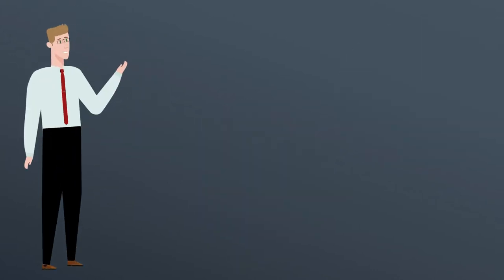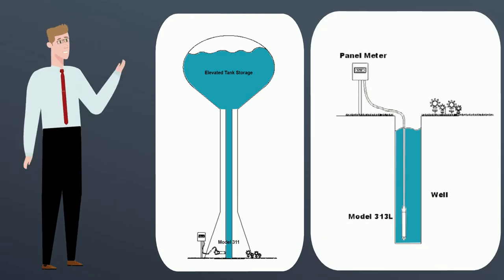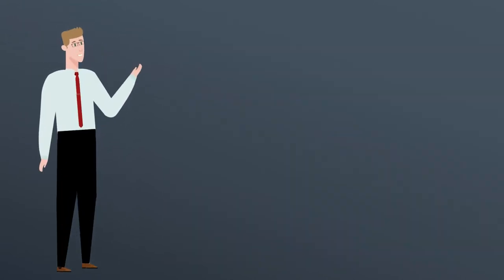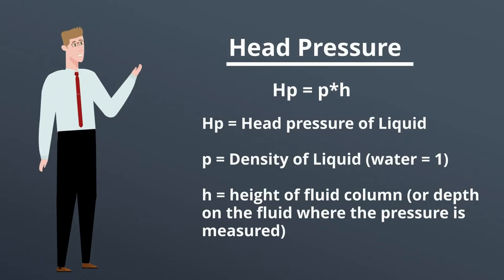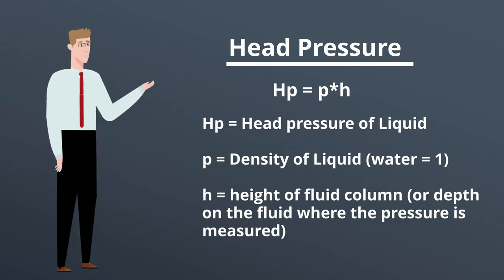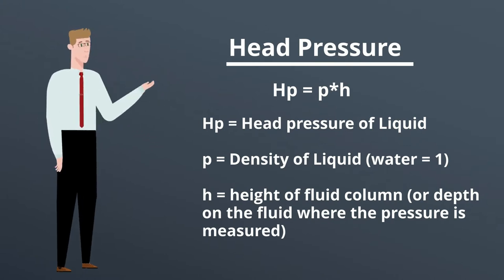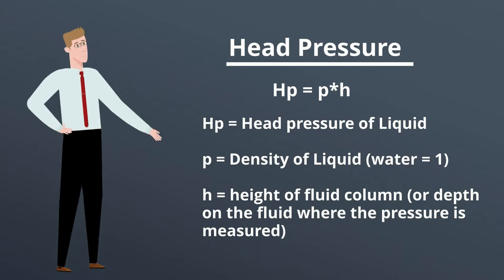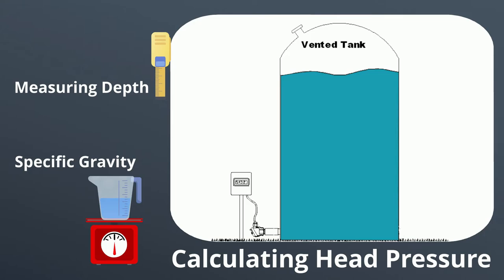These devices function on the same principle of a pressure transmitter by measuring static head pressure. Hydrostatic level sensors use the principle of head pressure. The formula shown provides the pressure range required to measure the depth in a specific tank or well, where head pressure is equal to the density of the liquid times the height of the fluid column or depth in the fluid where the pressure is measured. To calculate head pressure you need to know the measuring depth, typically measured in feet or meters of water, and the specific gravity of the media you are measuring.